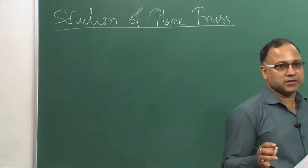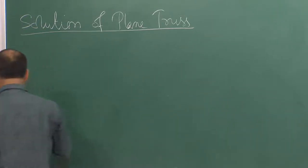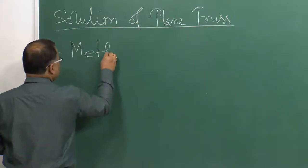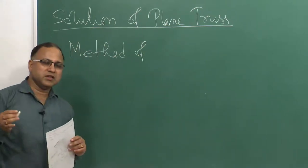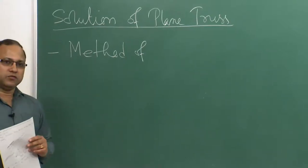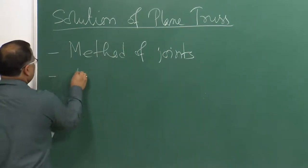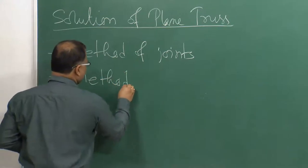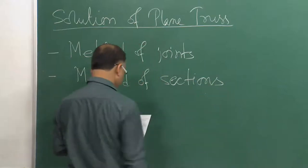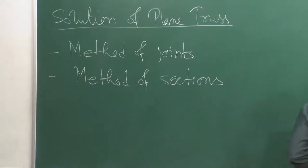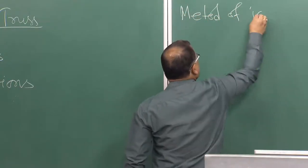There are two methods by which we can solve or analyze the plane truss. The first one is method of joints - we discussed this a little in the last lecture - and the second is method of sections. Now we will be going through them one by one, starting with the method of joints.